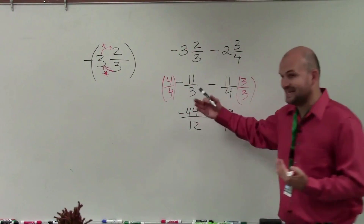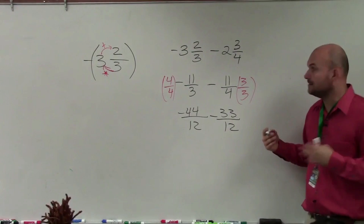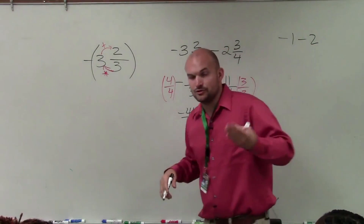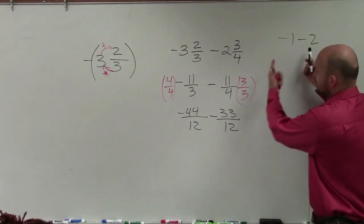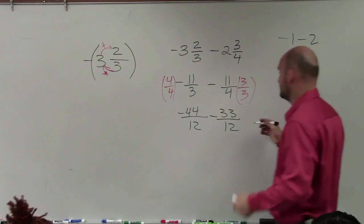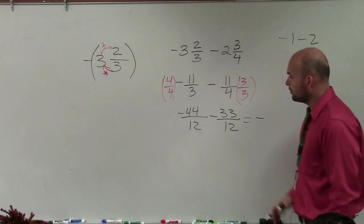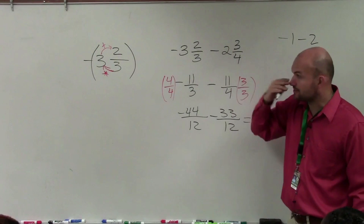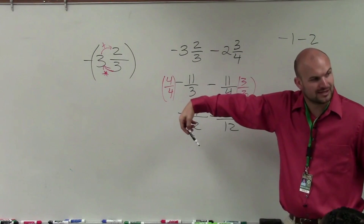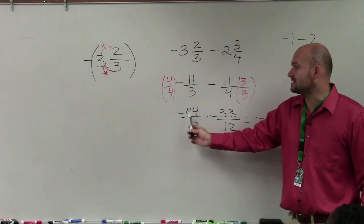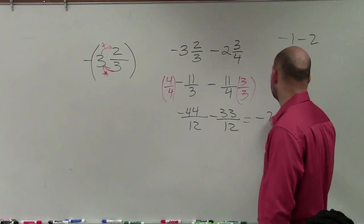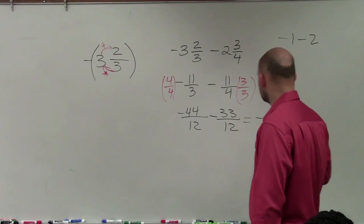Remember, negative minus a negative is basically like adding. Think of it as negative 1 minus 2: if you owe a dollar and then borrow two more, you now owe $3. So basically we're adding the absolute values but the answer is negative. Also remember when dealing with negatives, you can place the negative in the numerator. Think of this as negative 44 and negative 33 — so negative 44 minus 33 is going to be negative 77 over 12.